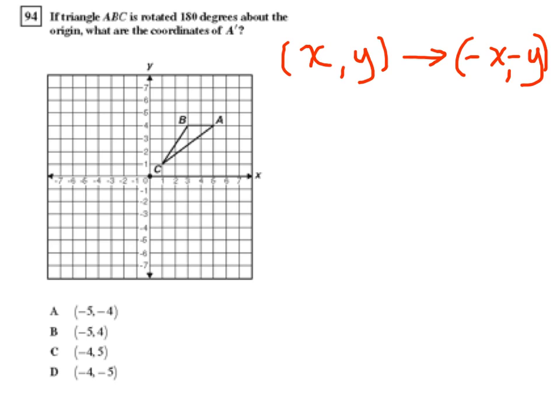So in this case, our A has a coordinate of 6... is that correct? I apologize. Our A has a coordinate of 5, comma 4.